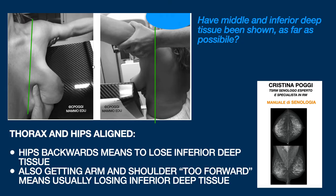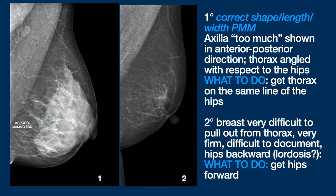Patient posture is an aspect we have already dealt with in the first two videos of this series for the CC projection. It is very important for the MLO projection too. The thorax and hips must be on the same line. If the patient bows towards the detector — that is to say bends at the waist — lower tissue will surely be missing. Also, if the patient leans too far forwards onto the detector with her shoulder and arm, for a sort of balancing, she will usually keep her hips back. Again, this leads to the loss of inferior tissues.